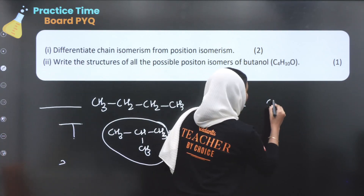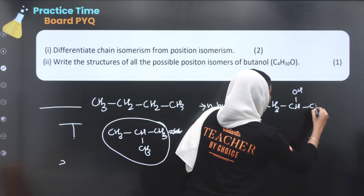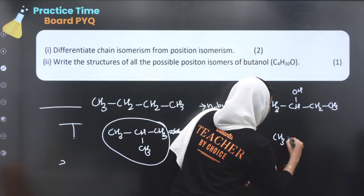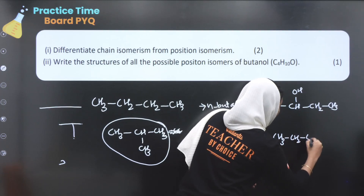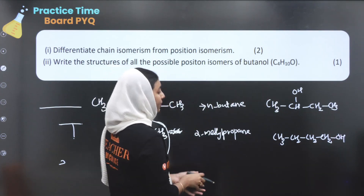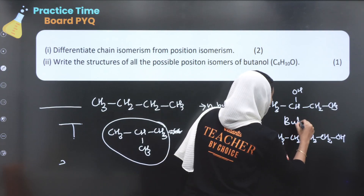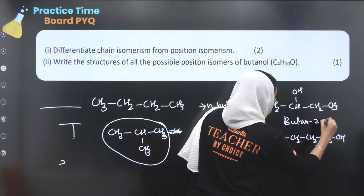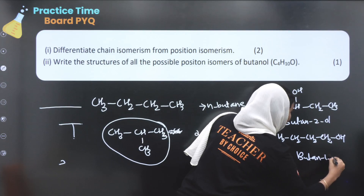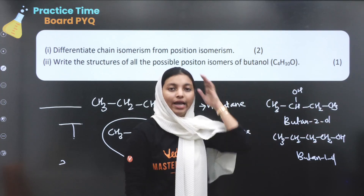Position isomers: CH3 CH(OH) CH2 CH3 and CH3 CH2 CH2 CH2 OH. This component is called butan-2-ol and butan-1-ol. This is the position of the OH group — that is position isomerism.